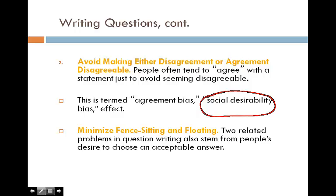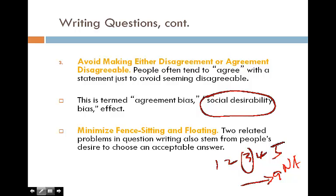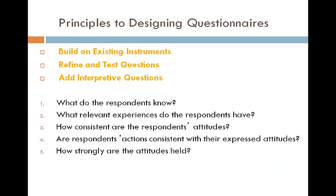Next is to minimize fence sitting and floating. On a scale of one to five, people may choose three as a fence-sitting response. Or if there is a 'not applicable' option, people may default to selecting that. These are also very easy mistakes to make in questionnaire design.